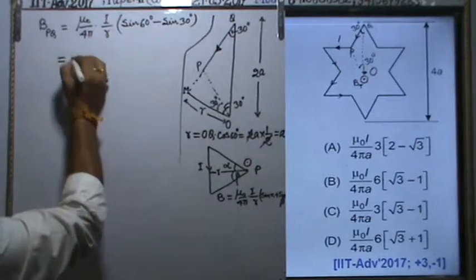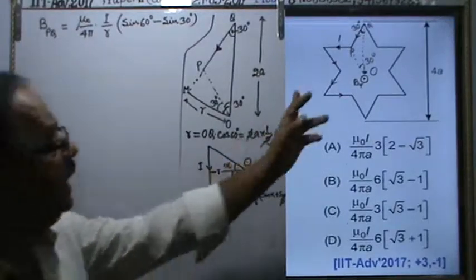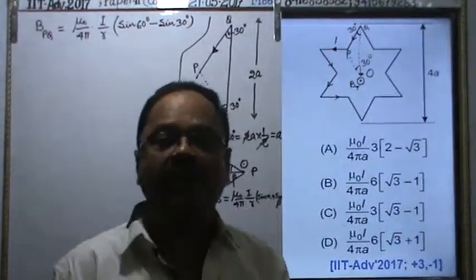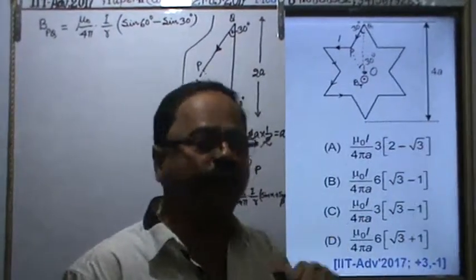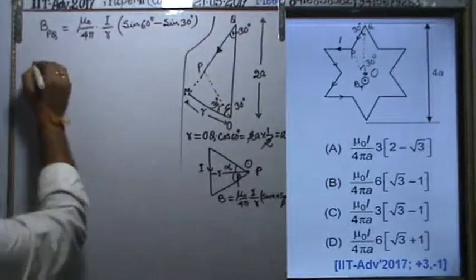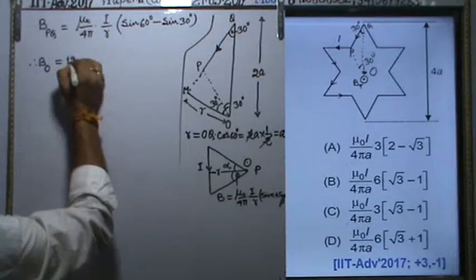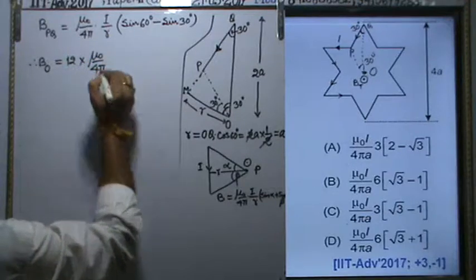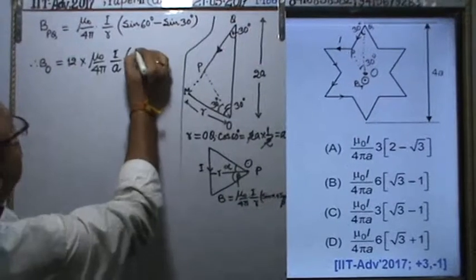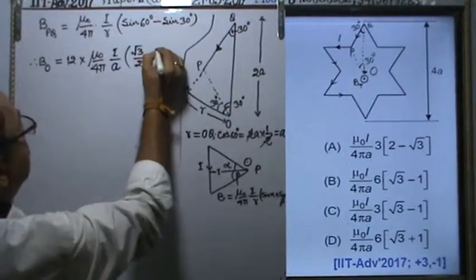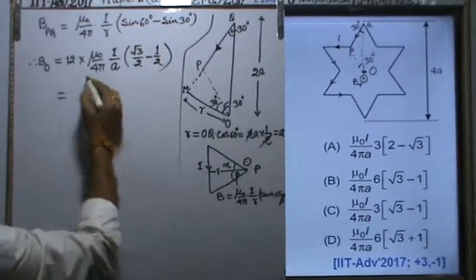Now let me write the total. All conductors carrying current produce magnetic field perpendicular to plane of paper, outward. All contributions add up. For 12 arms, B total at O equals 12 × μ₀/4π × I/a × (sin 60° - sin 30°). Sin 60° is √3/2 and sin 30° is 1/2. Taking 2 common, this becomes 6 × μ₀/4π × I/a × (√3 - 1).